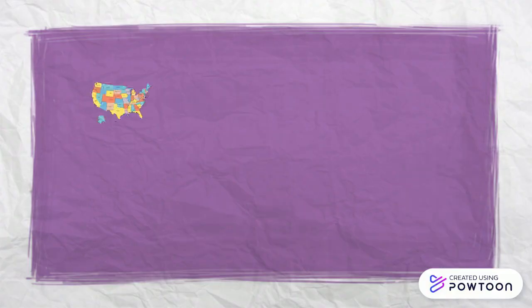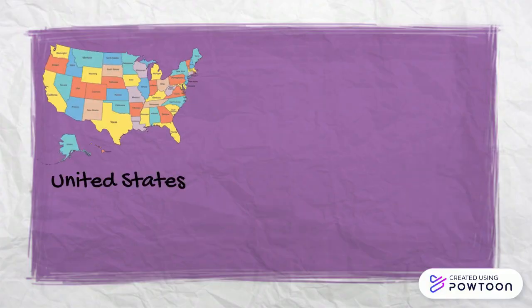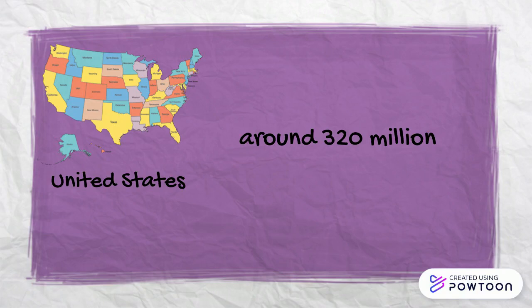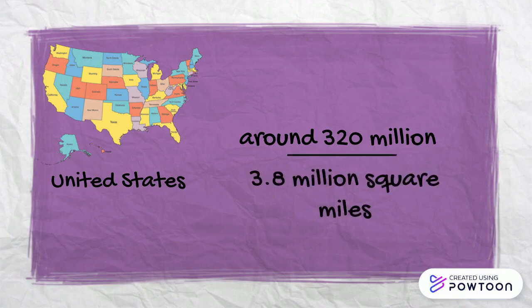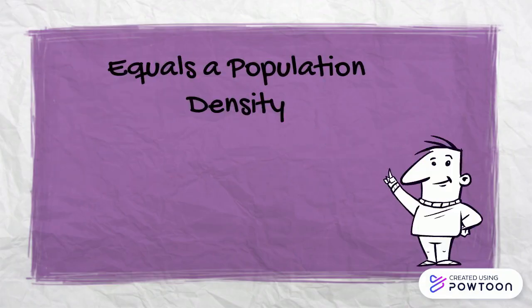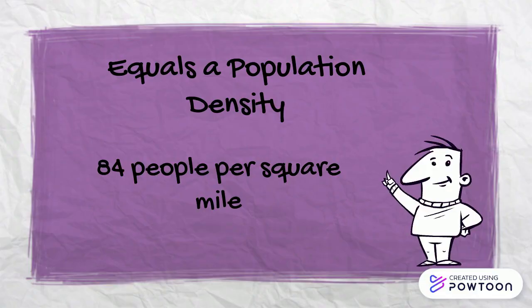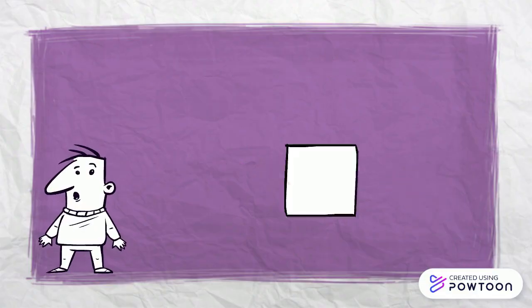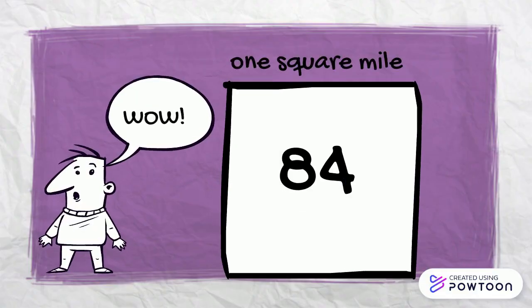For example, the United States population is around 320 million. You divide that number by the land area of around 3.8 million square miles, and it gives a population density of 84 people per square mile. This means that 84 people live on each square mile of the United States.